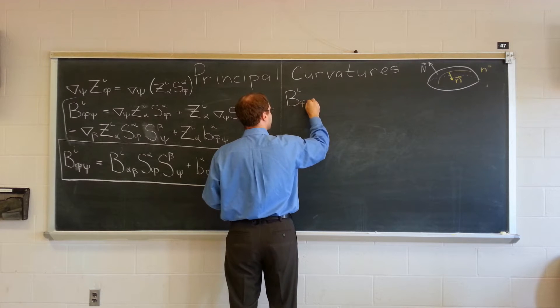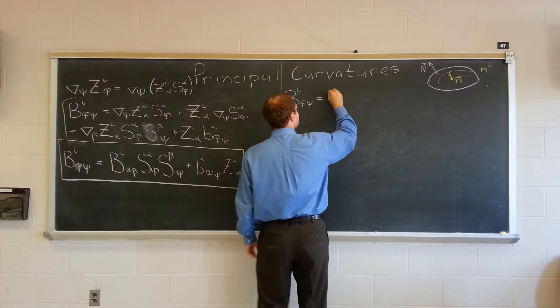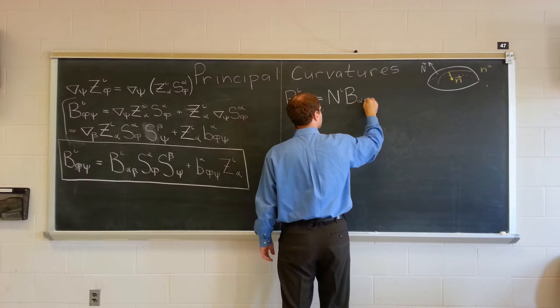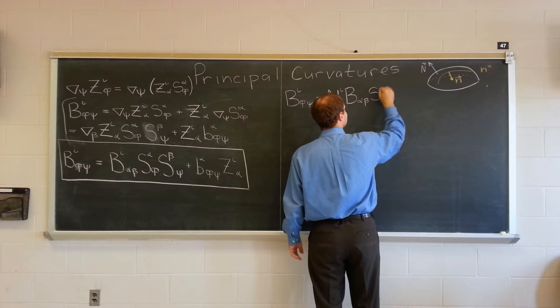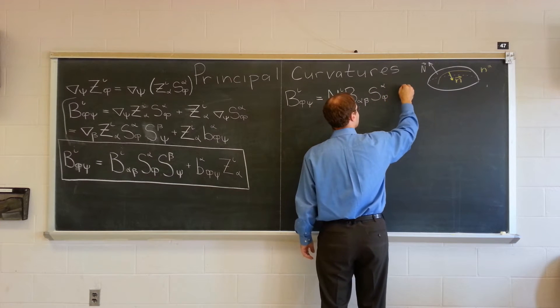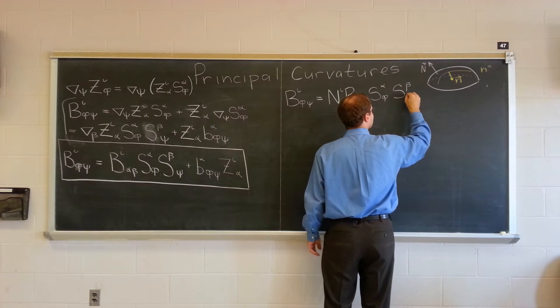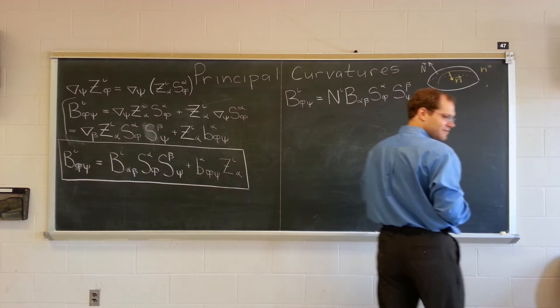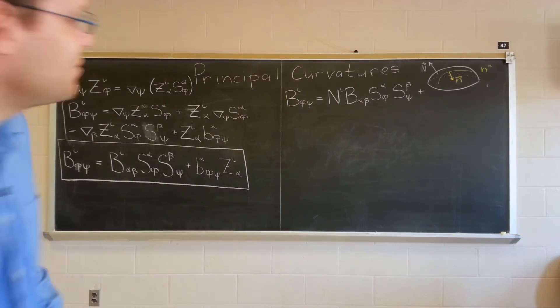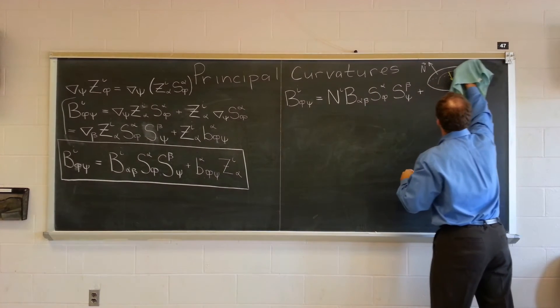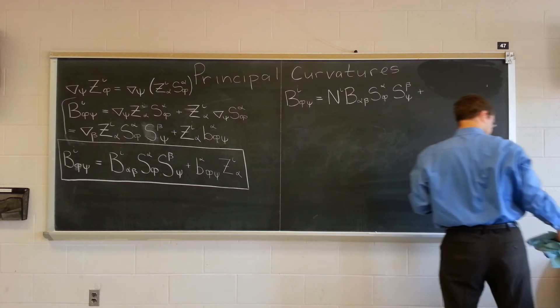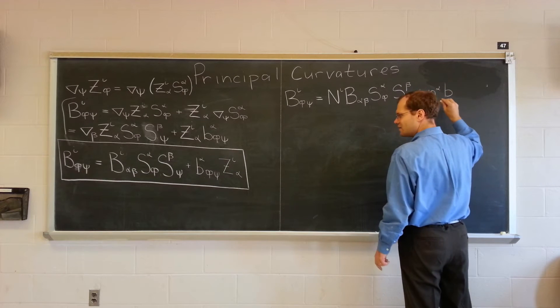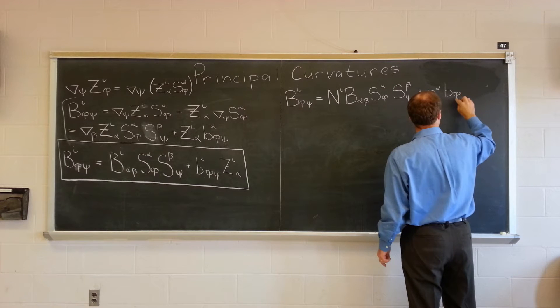B I phi psi equals, let's see what we have here. N^I B alpha beta, our most familiar curvature tensor, times S alpha phi, S beta psi, plus. Alright, hopefully you'll have this mental image in your mind, but I now need the space, so I'm erasing this beautiful drawing.